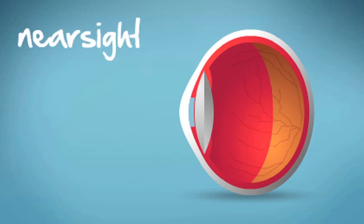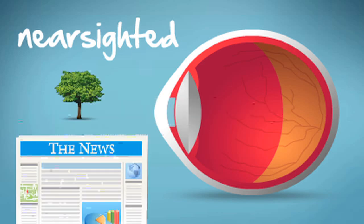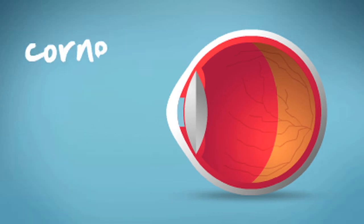But when your eyeball is too long, light rays achieve a point of focus before they can even reach the retina. This means you are nearsighted and objects appear blurred in the distance. Many eyes also have an irregularly shaped cornea,